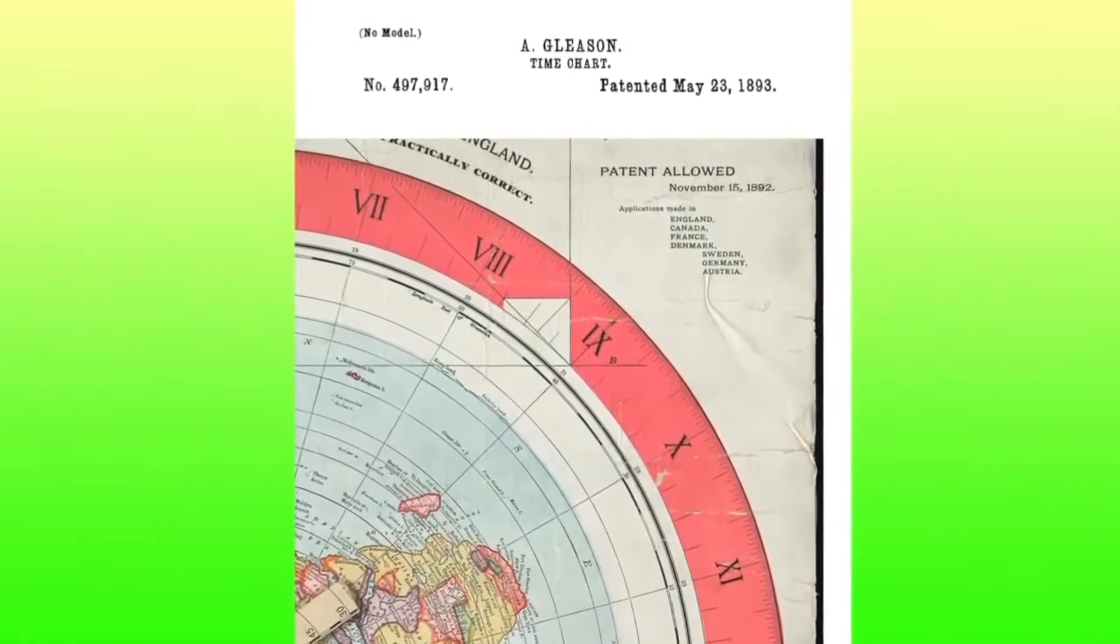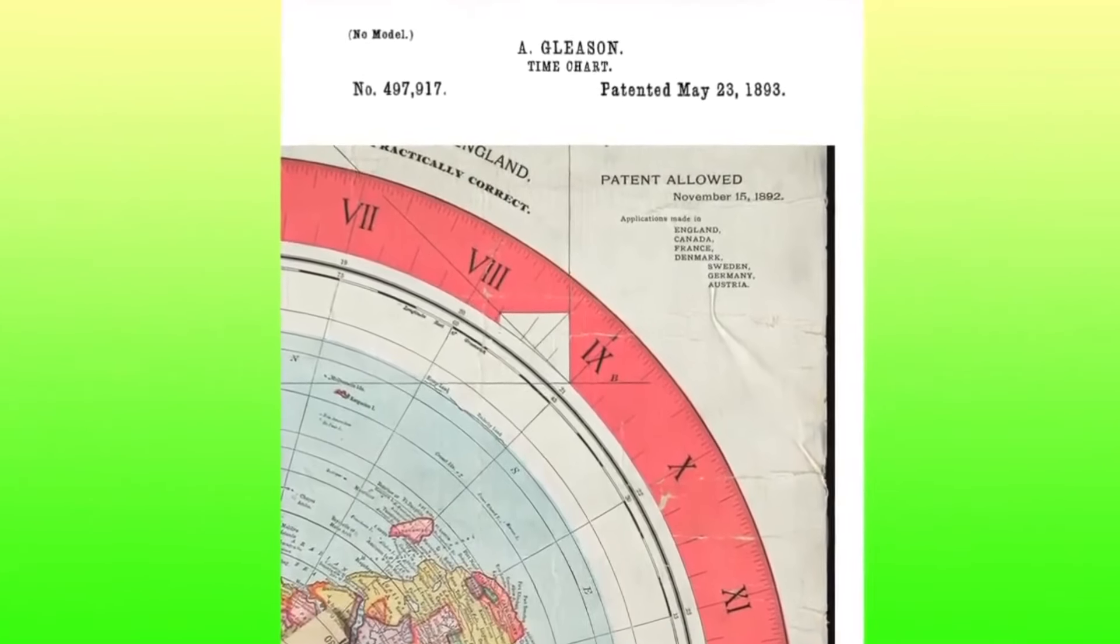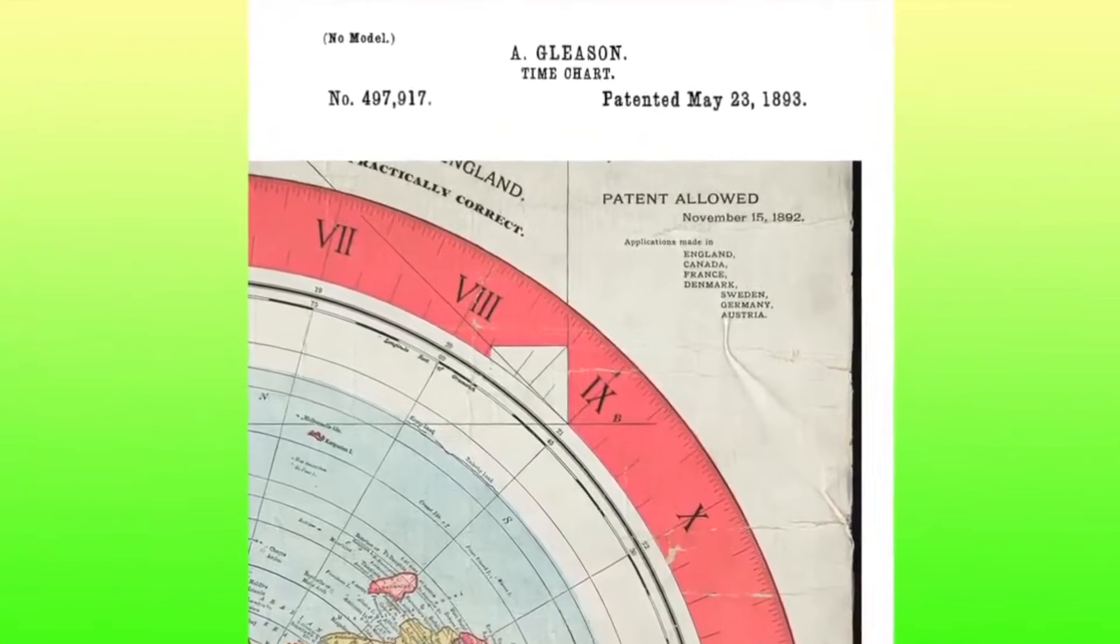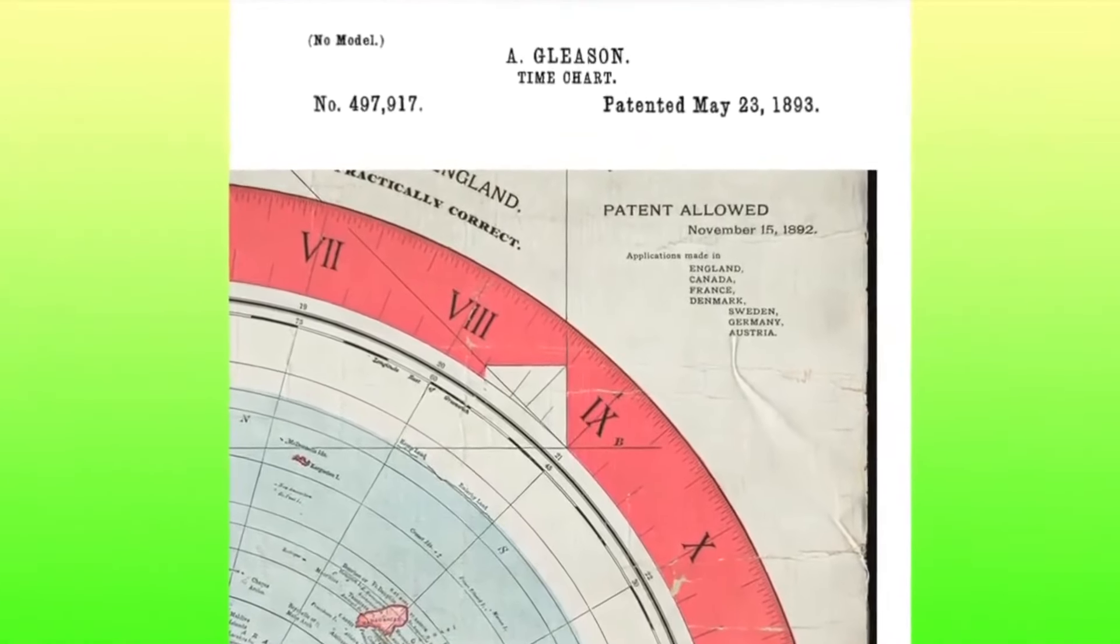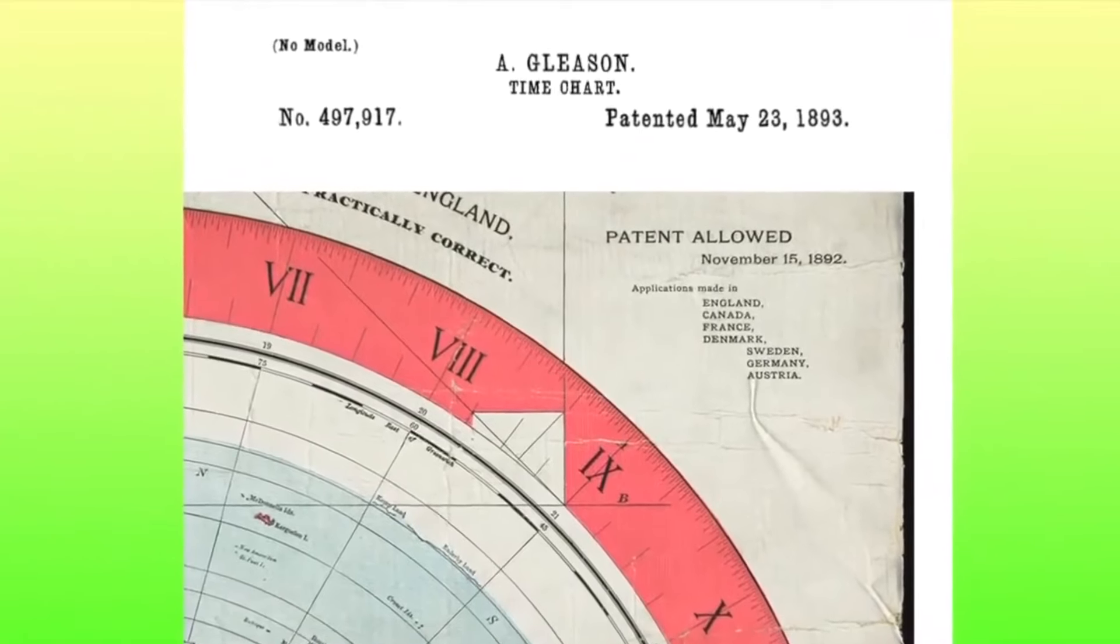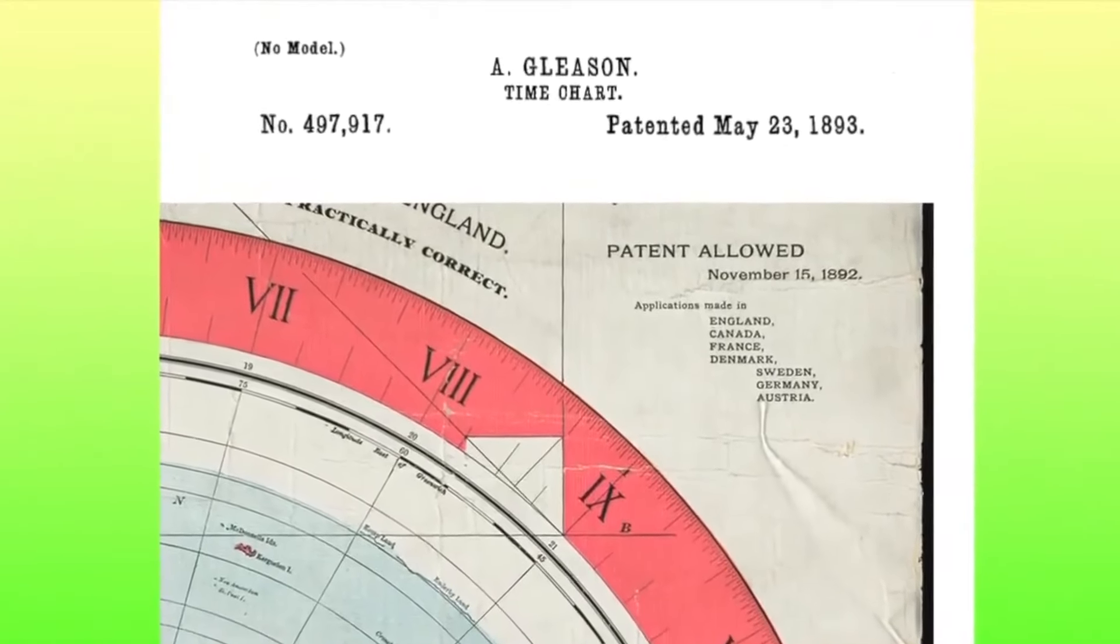It's the date allowed that matters most because it's the earliest date that the invention is considered to exist. The more eagle-eyed among you may have noticed that the application date and the allowed date are some six months apart. Now you know why.